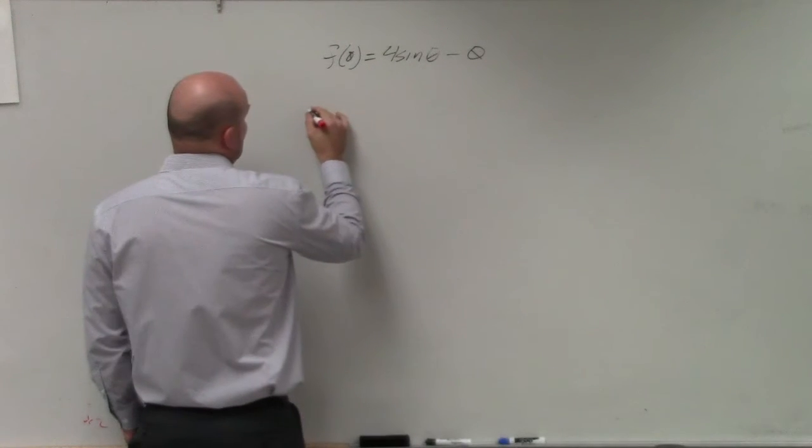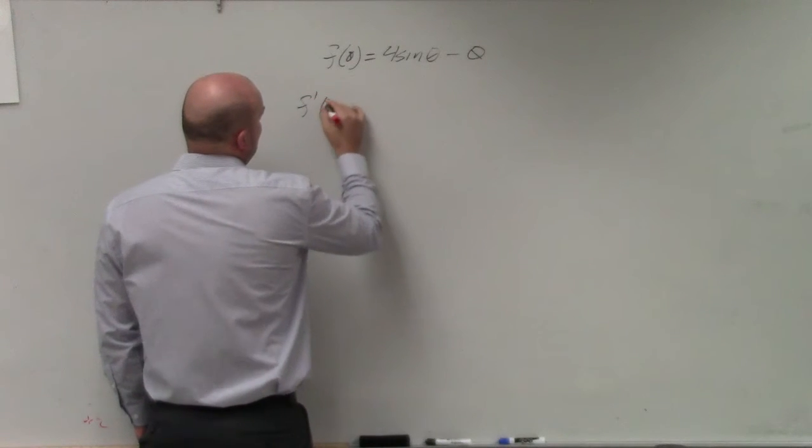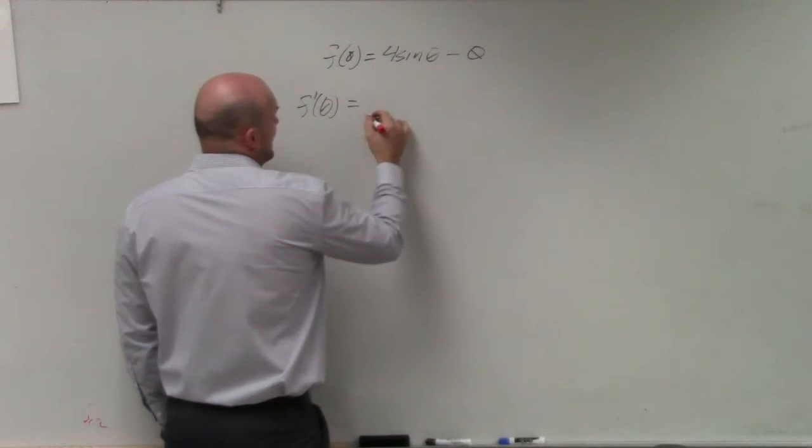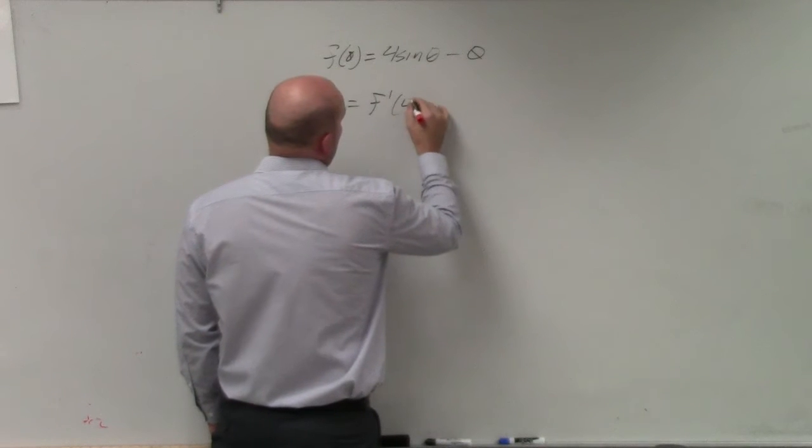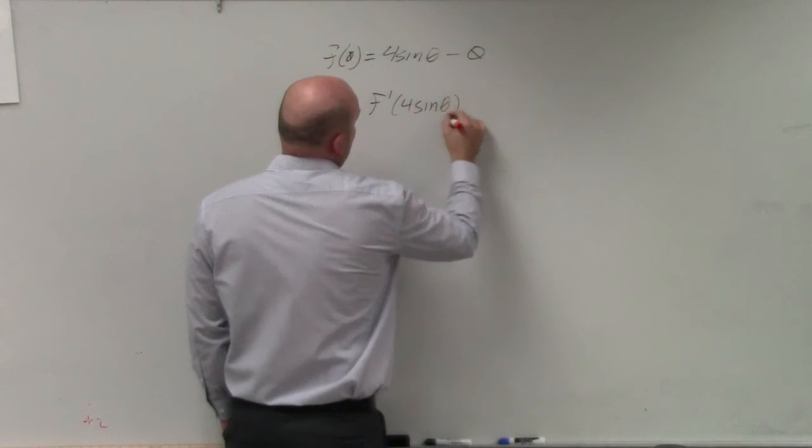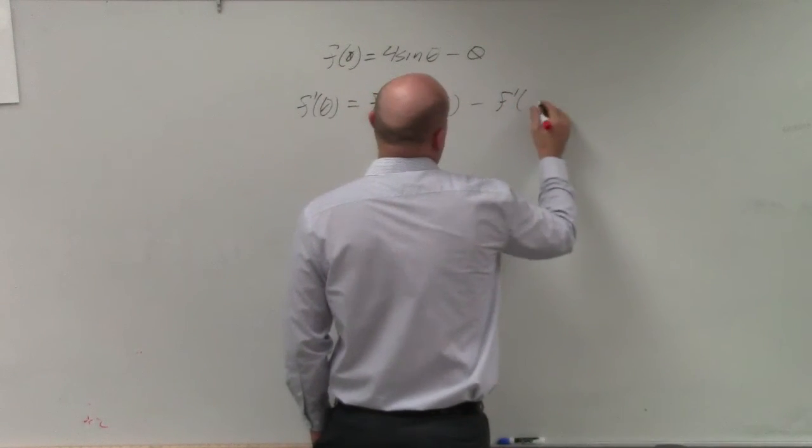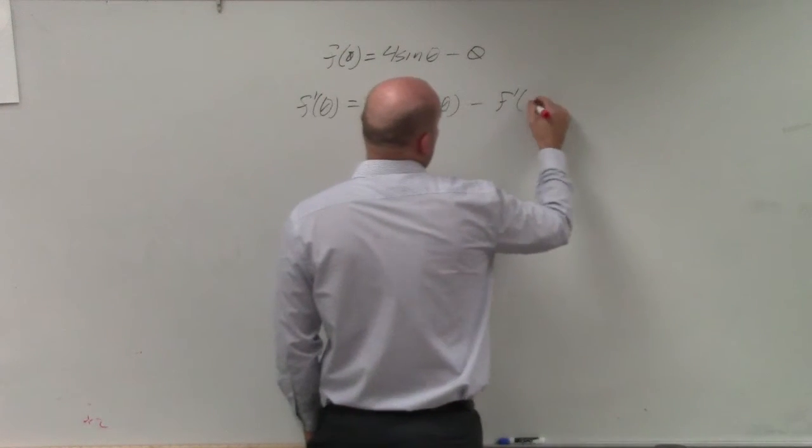So if I'm going to say f prime of theta, we can look at that as the derivative of 4 sine theta minus the derivative of theta.